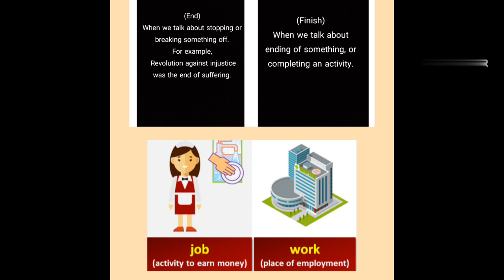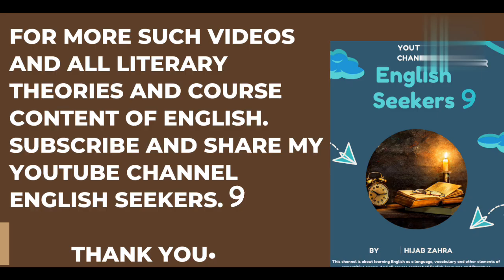Next, 'finish' is used when talking about ending or completing an activity. For example: 'I have finished my artwork.' Next, 'job' means an activity to earn money — جو کام آپ کر رہے ہیں اور وہ آپ کو pay کرے، وہ job ہوتی ہے. And 'work' refers to a place of employment or personal effort — جیسے school، bank، یا اپنے لئے کام کرنا۔ For example: 'I am working to improve my English.' For more such videos, share and subscribe to my YouTube channel English Seekers 9, and must watch the previous two parts for better understanding. Thank you for watching.